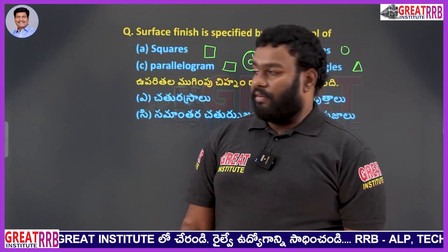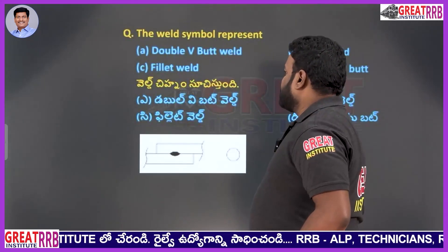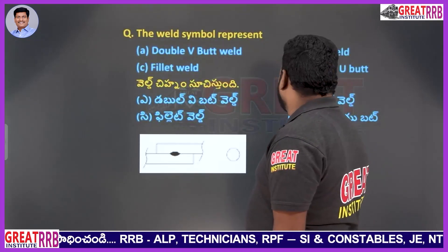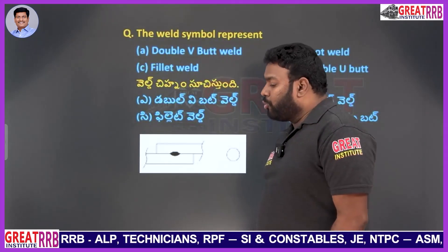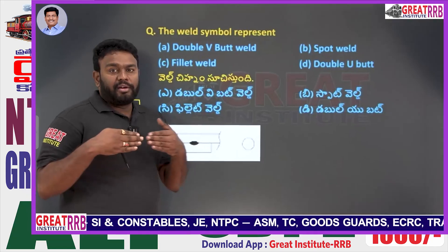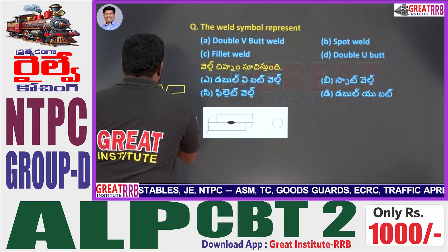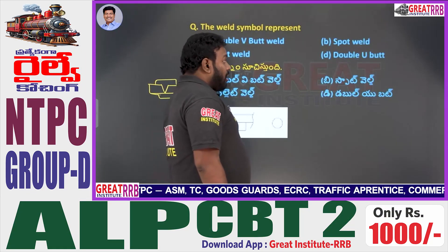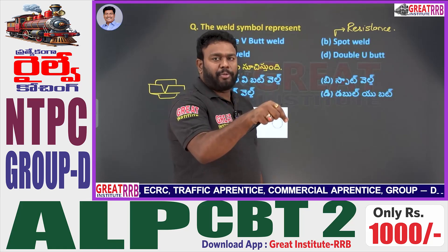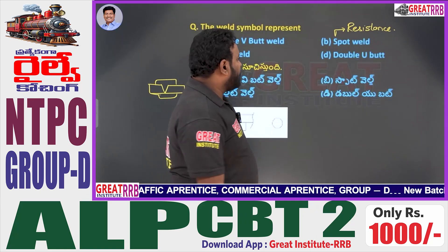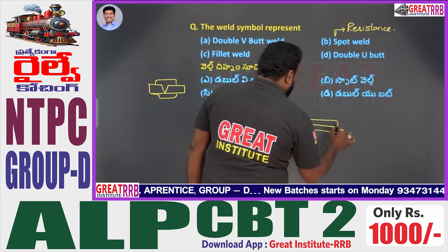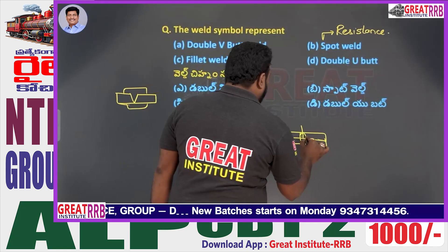The weld symbol represents: A double V butt weld, B spot weld, C fillet weld, D double U butt weld. In butt weld, V butt involves two plates welded together. Spot weld, also called resistance welding, welds plates at a particular point. The symbol shown represents a specific point, which is spot welding or resistance welding.